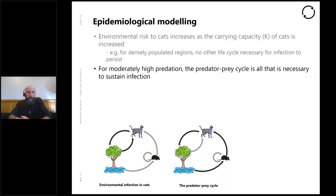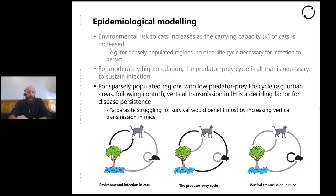Looking at the predator-prey cycle: for moderately high predation, the predator-prey cycle is all that's necessary. If you have enough cats eating infected rodents, you only need those arrows and can ignore any of the others. Interestingly, for very sparsely populated regions with low predator-prey life cycles — such as urban areas, or potentially following control when cats are at very low density — vertical transmission in the intermediate hosts, the rodents, is a deciding factor for disease persistence. Obviously eventually the parasite has to make its way back to the cat, so you can't ignore that pathway forever.